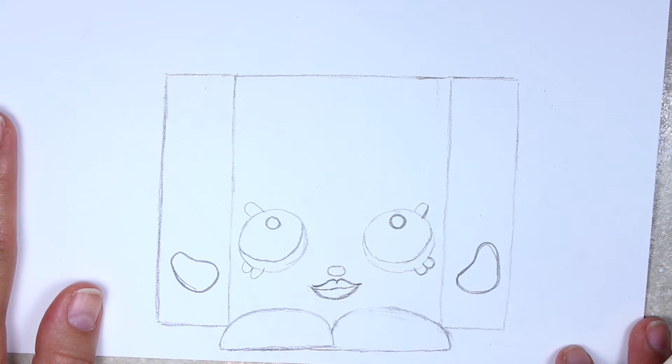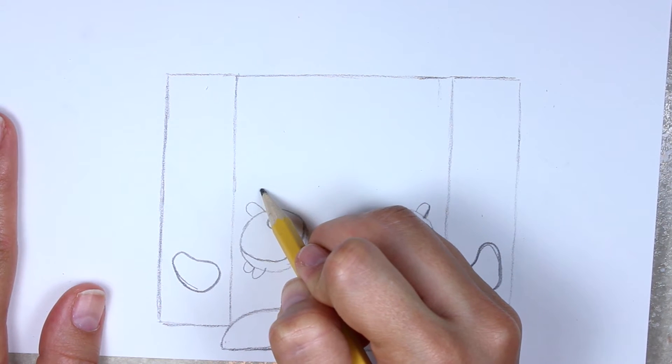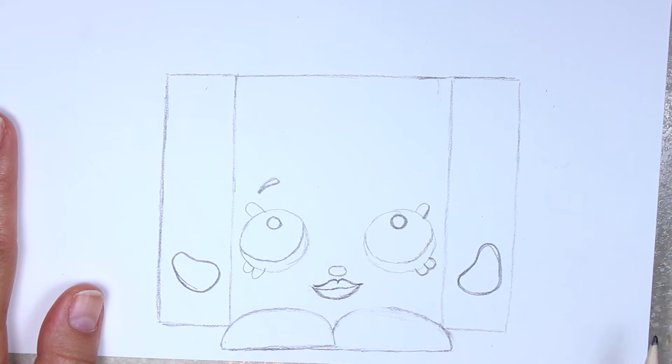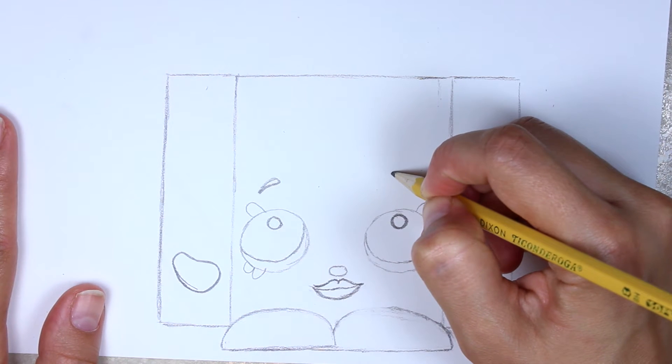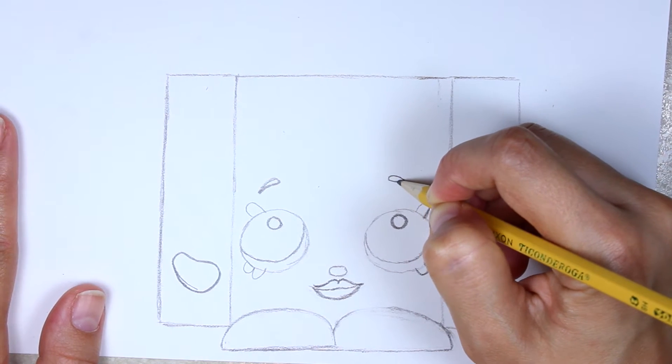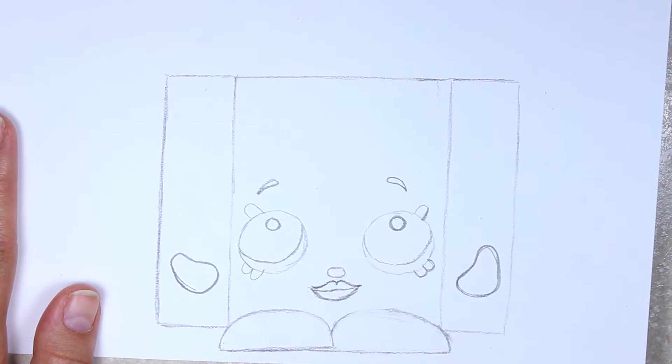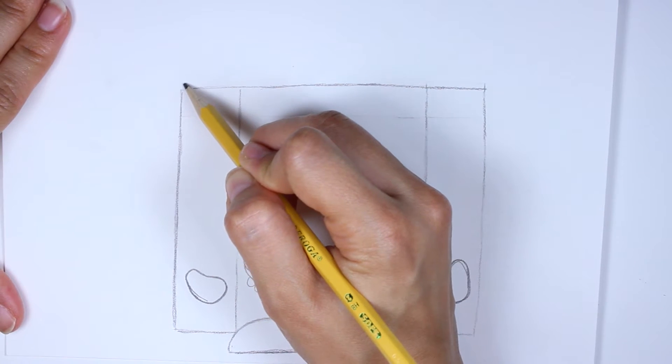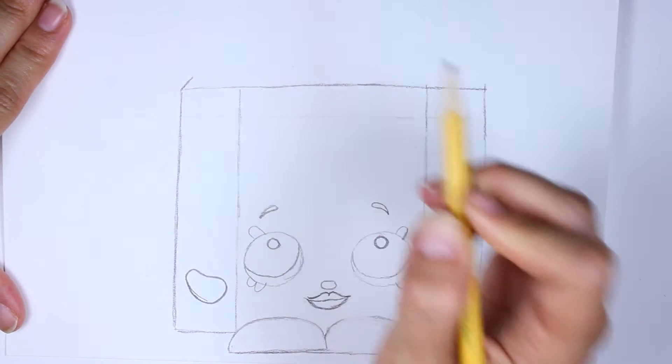Let's do her eyebrows. They look like little commas here, meaning on one end it's thin and on the other end it's thicker. Make another little comma here for her eyebrows. Now this is where things get a bit complicated. Draw a very short line at the corner like that.